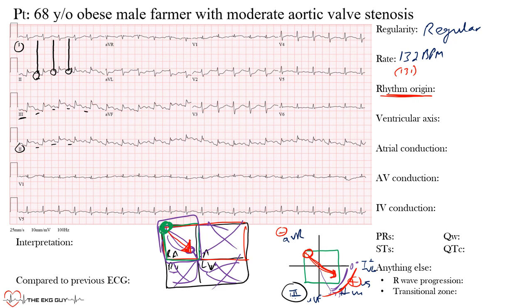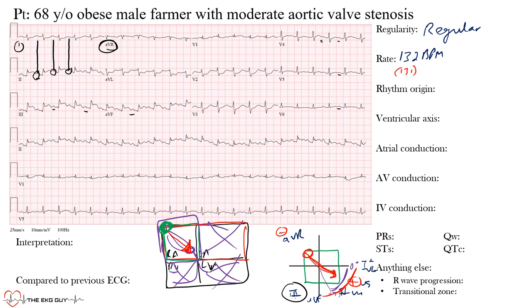Lead III also shows upright P waves. In aVF you can see upright P waves. In the lateral precordial leads V4, V5, and V6 you can see P waves, and in aVR the P waves are negative. This confirms sinus rhythm is present. We spent a lot of time on this, but hopefully it makes sense.